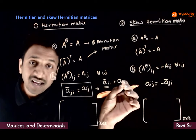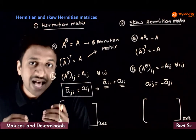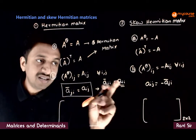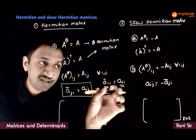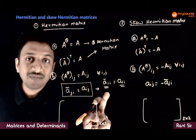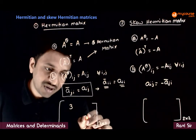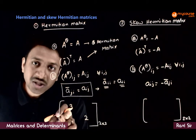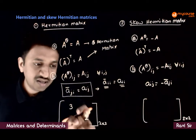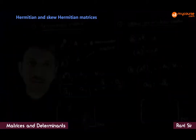If an element is exactly equal to its conjugate, obviously that means the element has to be purely real. So for a Hermitian matrix, the diagonal elements have to be purely real. For example, this number is 3 and this number is 2 — the conjugate of 3 is also 3, so A_ii equals its conjugate.